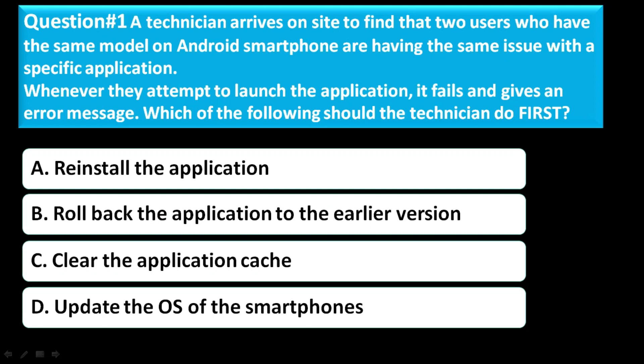Question 1: A technician arrives on site to find that two users who have the same model Android smartphone are having the same issue with a specific application. Whenever they attempt to launch the application, it fails and gives an error message. Which of the following should the technician do first? Option A: reinstall the application. Option B: roll back the application to an earlier version. Option C: clear the application cache. Option D: update the OS of the smartphones. The correct answer is D — update the OS of the smartphones.